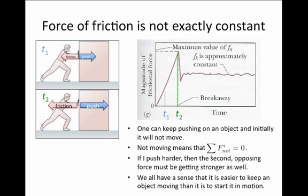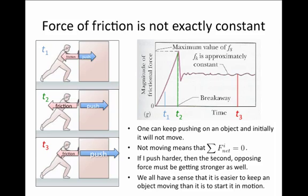At some time T2 we're pushing harder in order to make the object start moving, and at that point the force of friction has to increase as well because we still haven't managed to make the object move, so the forces are balanced. Finally at time T3, I am able to make the object move. Depending on whether it's moving at constant speed or accelerating, the force of friction is actually smaller at T3 than it was at T2, because this is the point where the object has broken away and is now sliding.